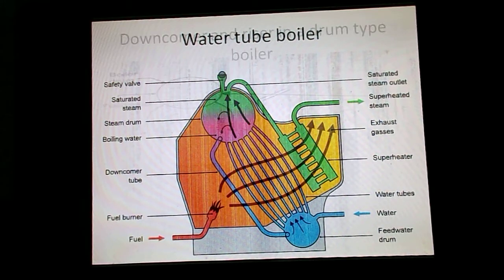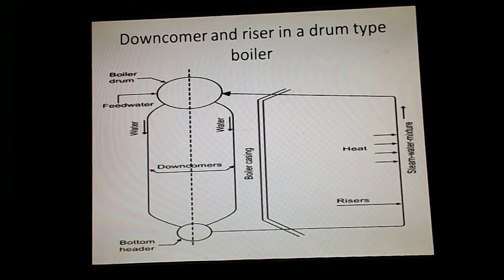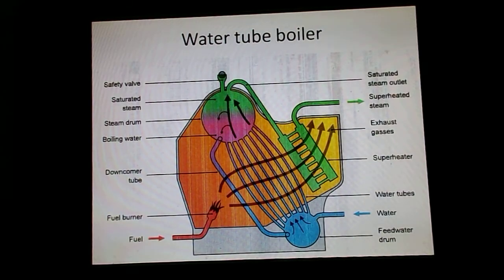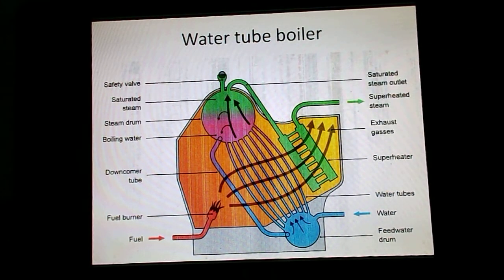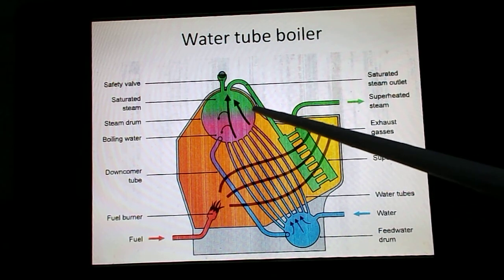The things will be more clear with the help of this diagram. Here is the down comer and here is the riser. Riser is exposed to heat. So, in the riser tubes, you are having mixture of steam and water. From the steam drum, the steam is going out. As long as there is steady state, feed water flow equals steam flow and the boiler drum level is being maintained.